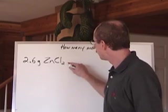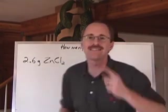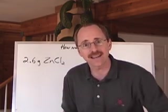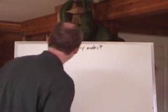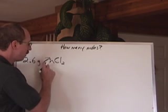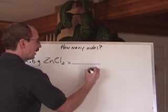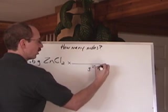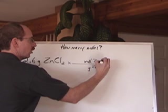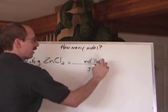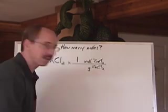So we need a number to multiply by here that's got grams in it and moles. That's the molar mass, that's the number in the periodic table for each of these elements. We can add them together. So 2.6 grams of zinc chloride, well we need to multiply by a ratio that gets rid of the grams of zinc chloride and leaves us with moles of zinc chloride because that's what we want in the end. So we need the molar mass.